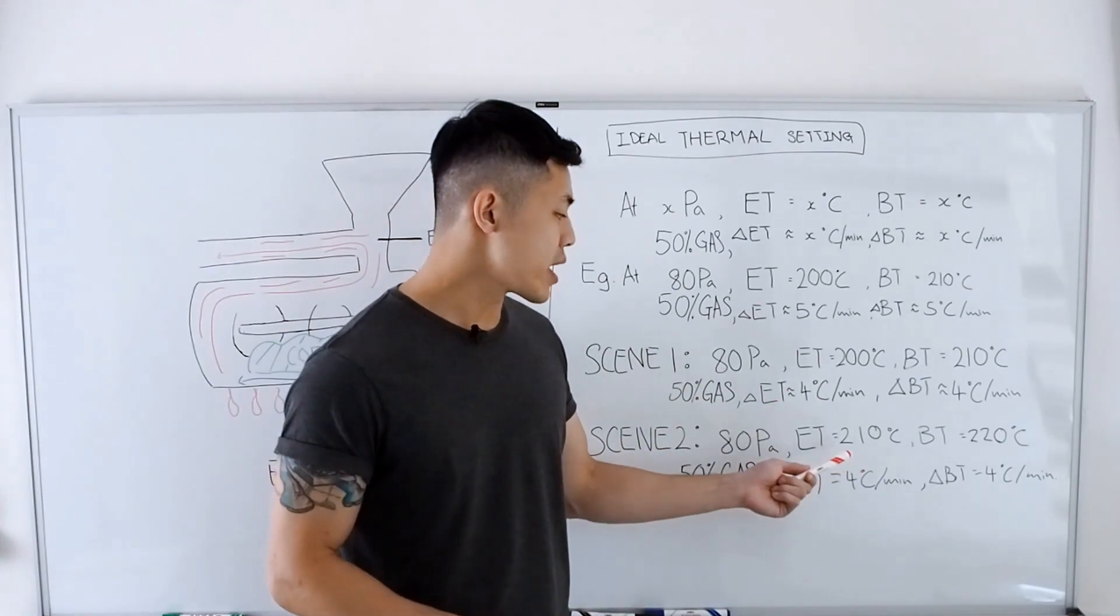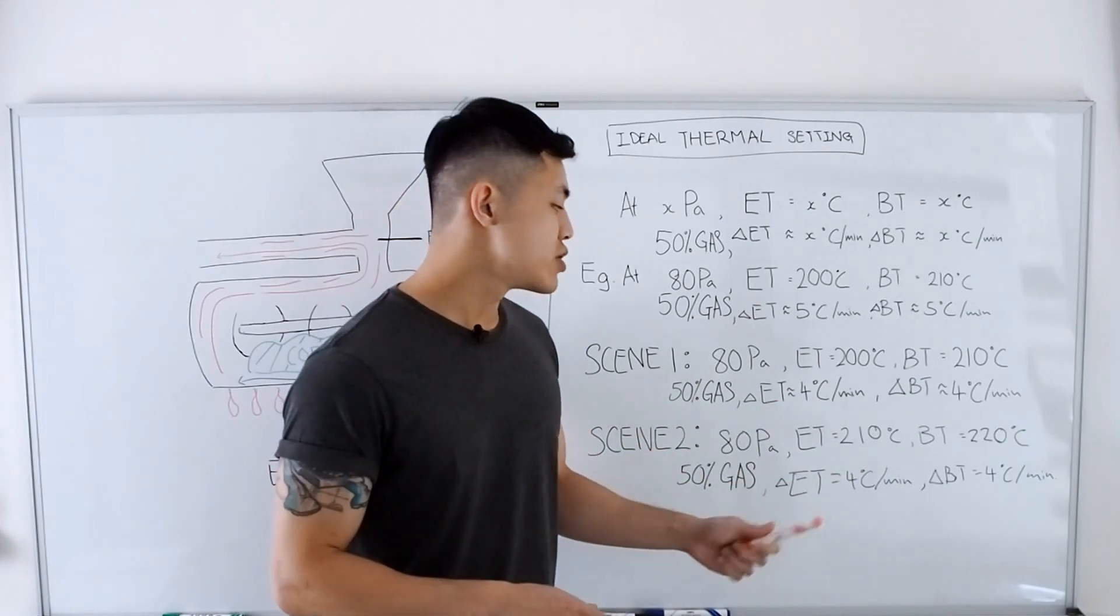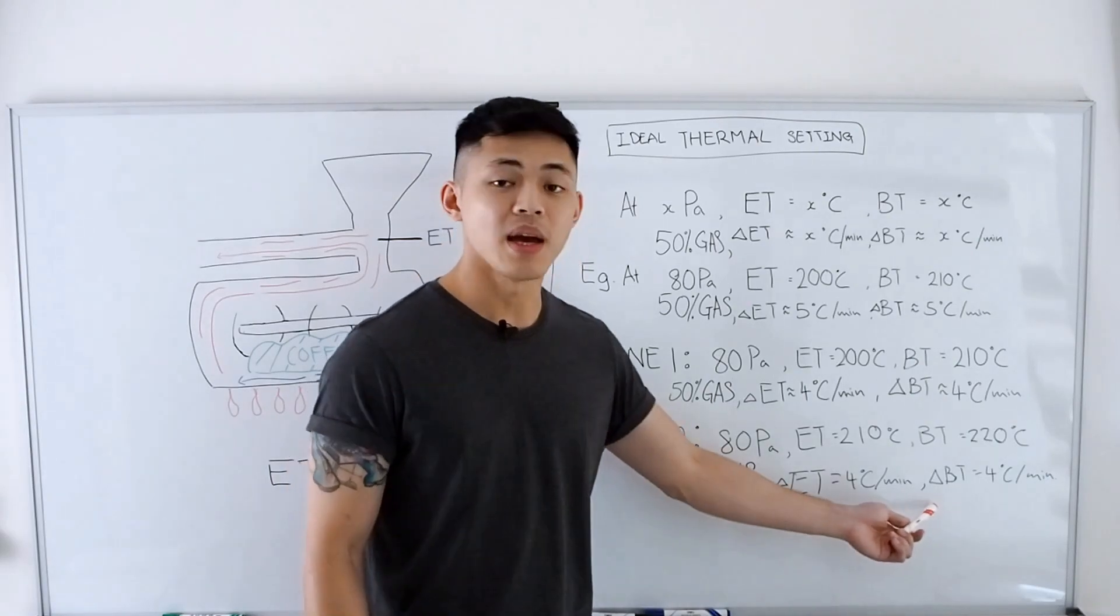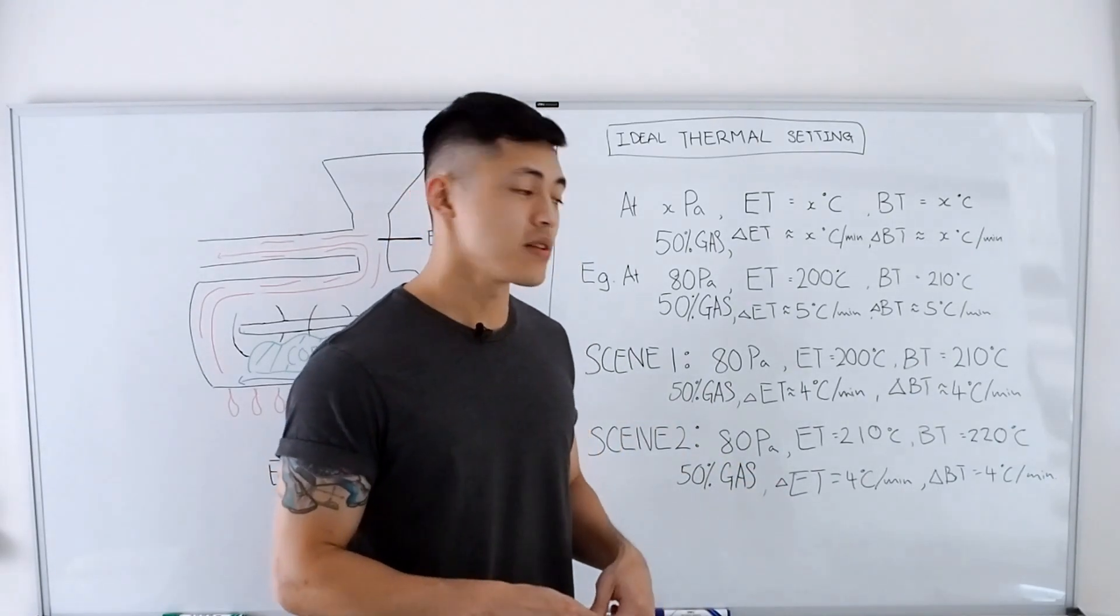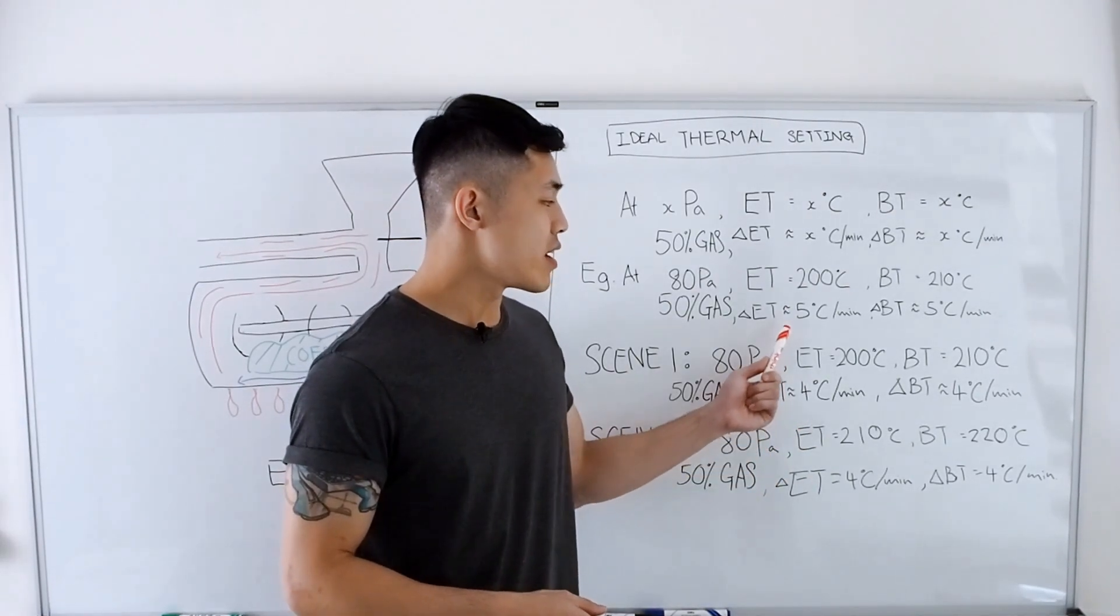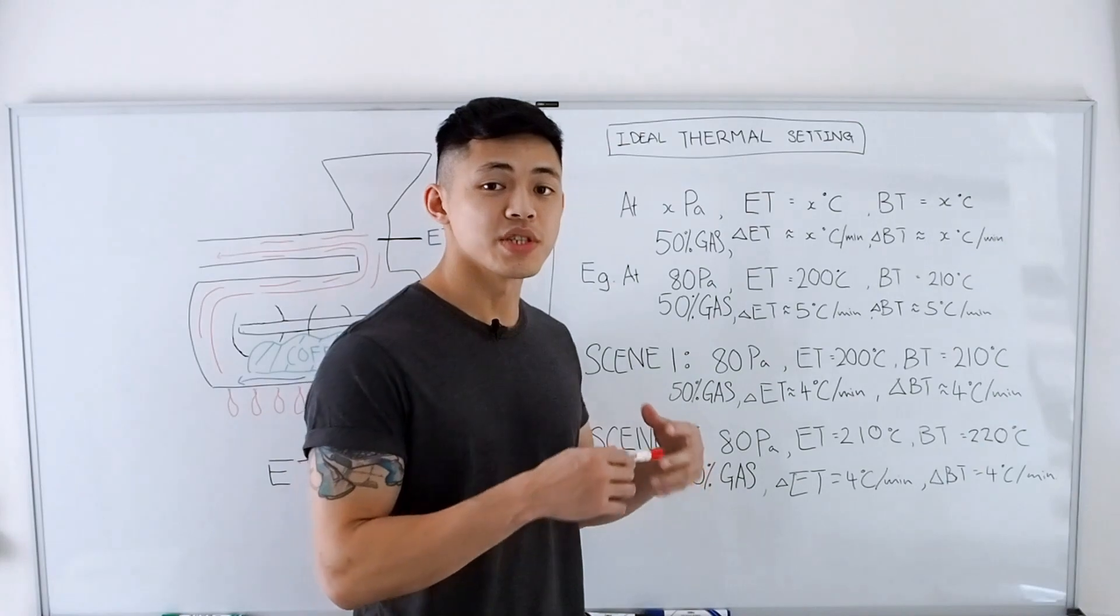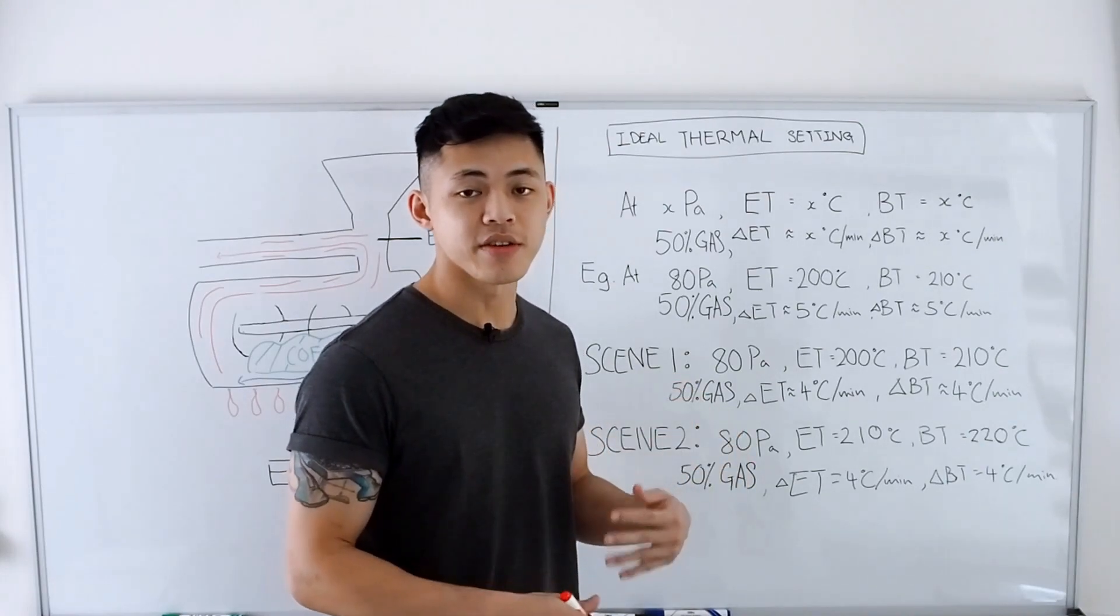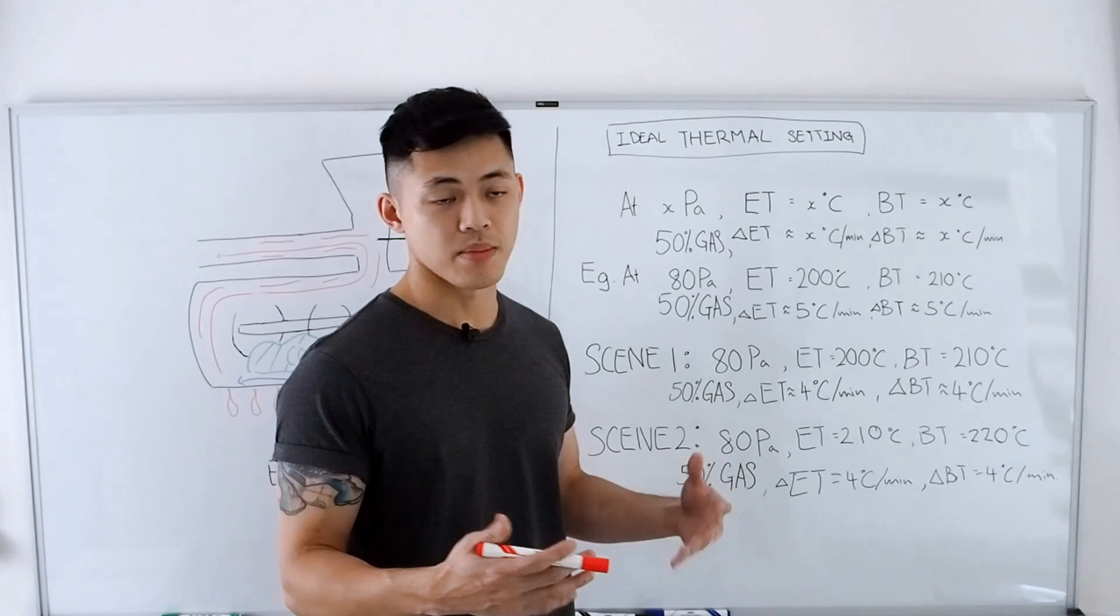But you should take note that the higher the temperature is, generally the delta ET and BT will be lower because it's not possible for the thermal energy in the roaster to maintain high levels of rate of rise when the temperatures are higher. It will gradually decrease as the temperature in the roaster goes up.